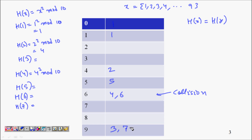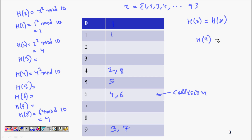h(8) = 8² mod 10 = 64 mod 10 = 4, so 8 maps to cell 4 — another collision. h(9) = 9² mod 10 = 81 mod 10 = 1, so 9 maps to cell 1.